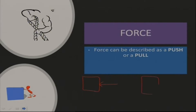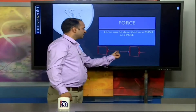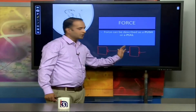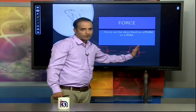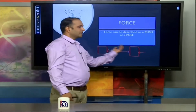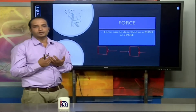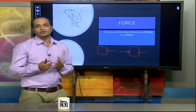When an object is pulled towards the left or right position depending on the force applied, it is a pull. When a person applies force in the forward direction, it is a push. Push and pull are reversible processes.